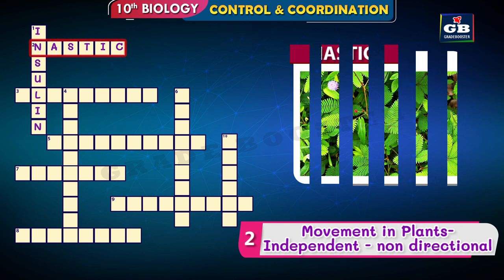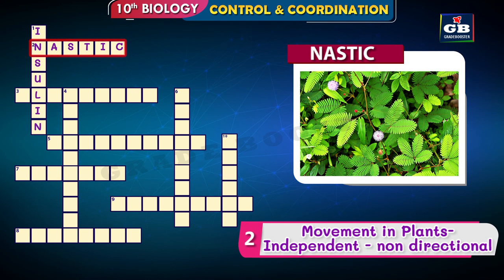The answer is nasty. Nasty movements are independent of growth, are non-directional, and occur due to turgor changes. Closing and opening of leaves in the touch-me-not plant is an example of nasty movements.